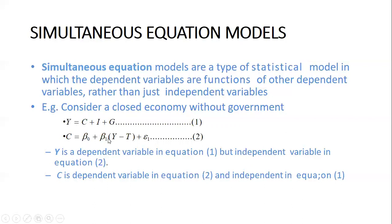We have C equal to beta-naught plus beta-one times (Y minus T). This is the consumption function, where Y minus T is the disposable income. So C equals beta-naught plus beta-one(Y minus T) plus epsilon-one. What we can see here is that in equation one, C is predicting Y, but in equation two, Y is predicting C.